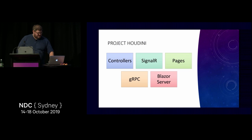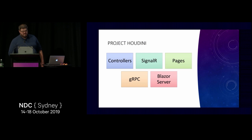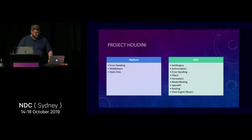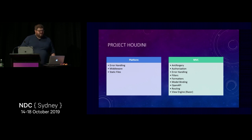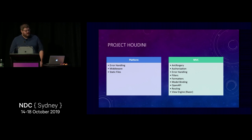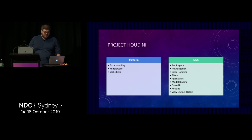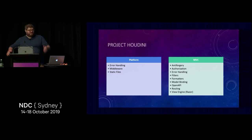Next I want to talk about Project Houdini, which relates to all our frameworks and how they integrate with the rest of our framework. Does this seem balanced? I have a list of features in ASP.NET Core divided between whether they're implemented at the platform layer or whether they're part of ASP.NET Core MVC. The platform layer has a couple of unique things, and MVC has this embarrassment of riches — all these features in the right column that are unique to MVC.